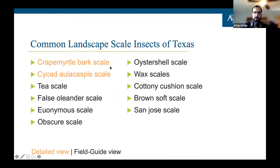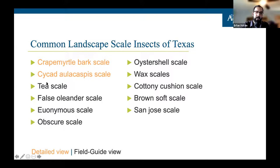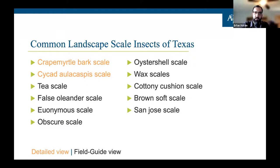The presentation will cover crepe myrtle bark scale and cycad aulacaspis scale in detail because they are of particular importance in Texas — one as a relatively new invasive and one as a quarantine pest. The rest of the common Texas scales will be covered in a field guide format: a single slide each with description, host plants, and management, available as a PDF on sixleggedaggie.com.